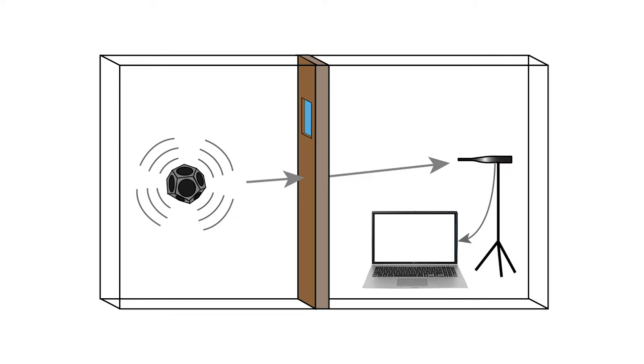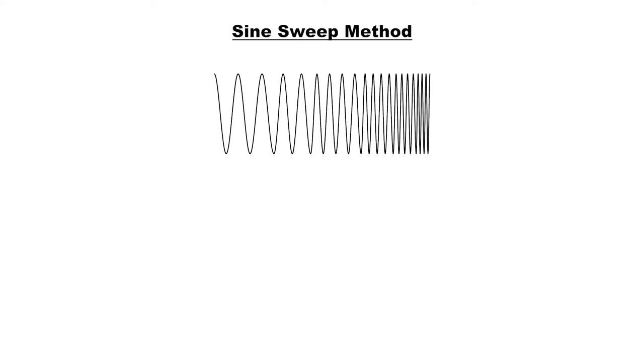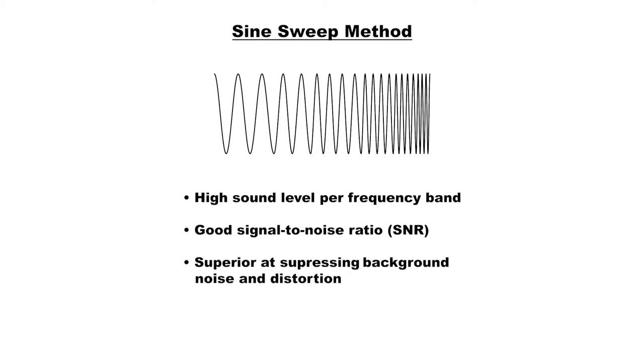In modern acoustic measurements you can use the sine sweep method. The sine sweep method makes the speaker have a high sound level per frequency band, giving a good signal-to-noise ratio, and it is generally superior at suppressing background noise and distortion.